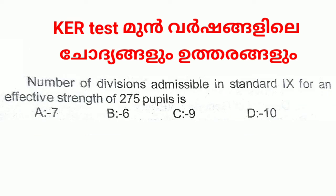Number of divisions admissible in Standard 9 for an effective strength of 2100 pupils: A. 8, B. 8, C. 19, D. [dash]. Answer: B. 8.